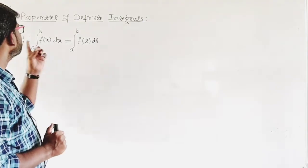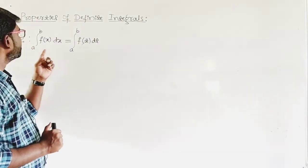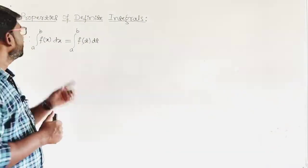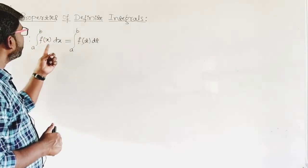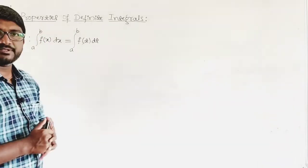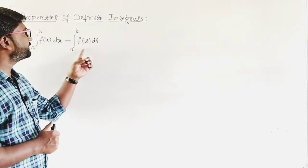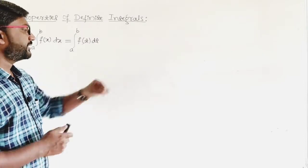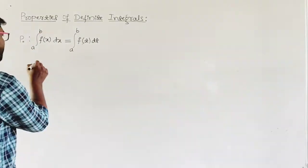We are going to take the first one — it is property zero, P0. The property states: integral a to b of f(x) dx equals integral a to b of f(t) dt. Let us go for the proof.